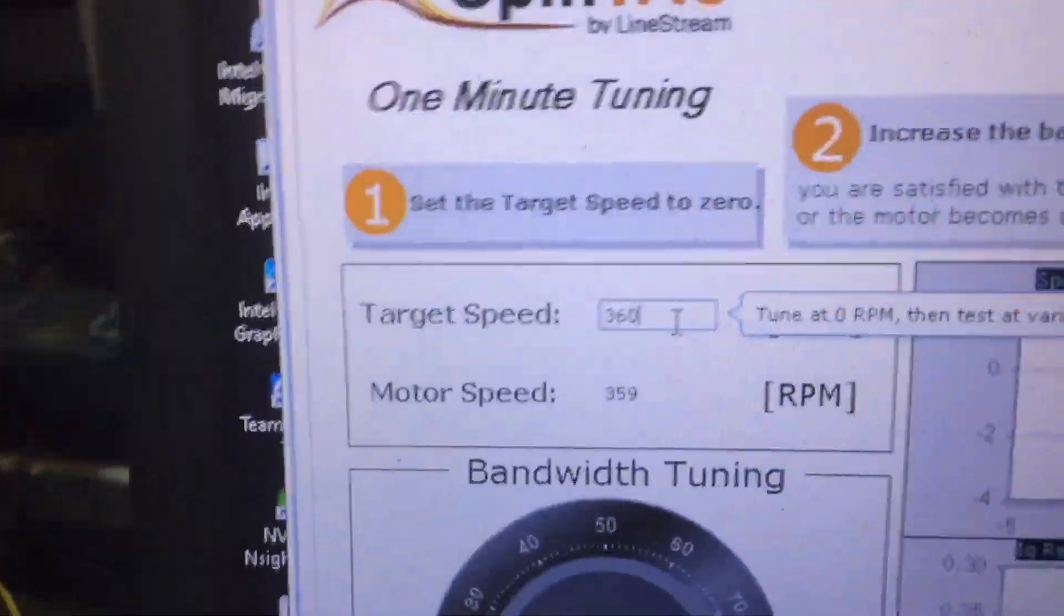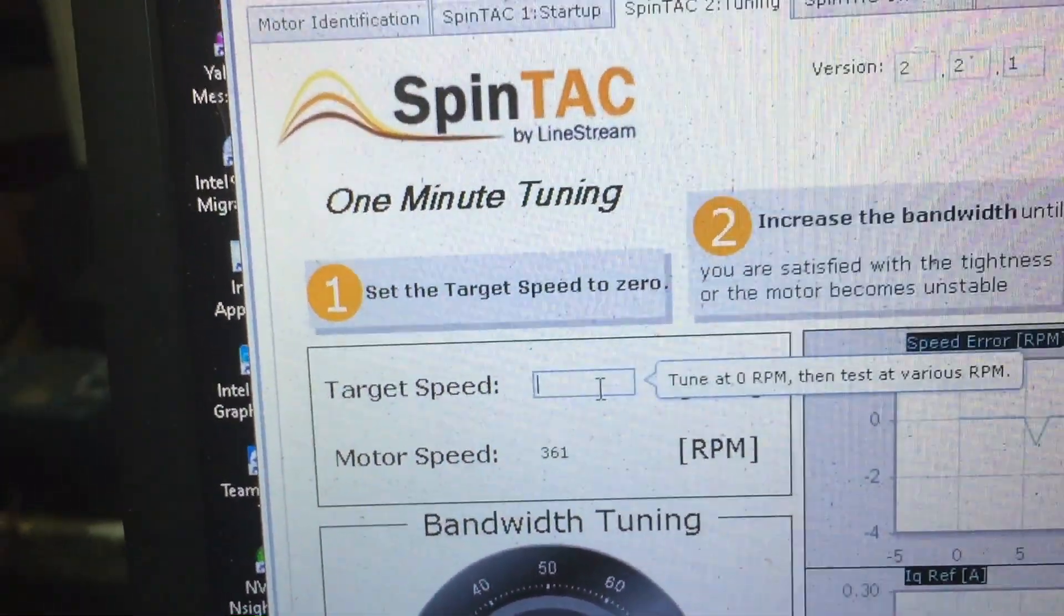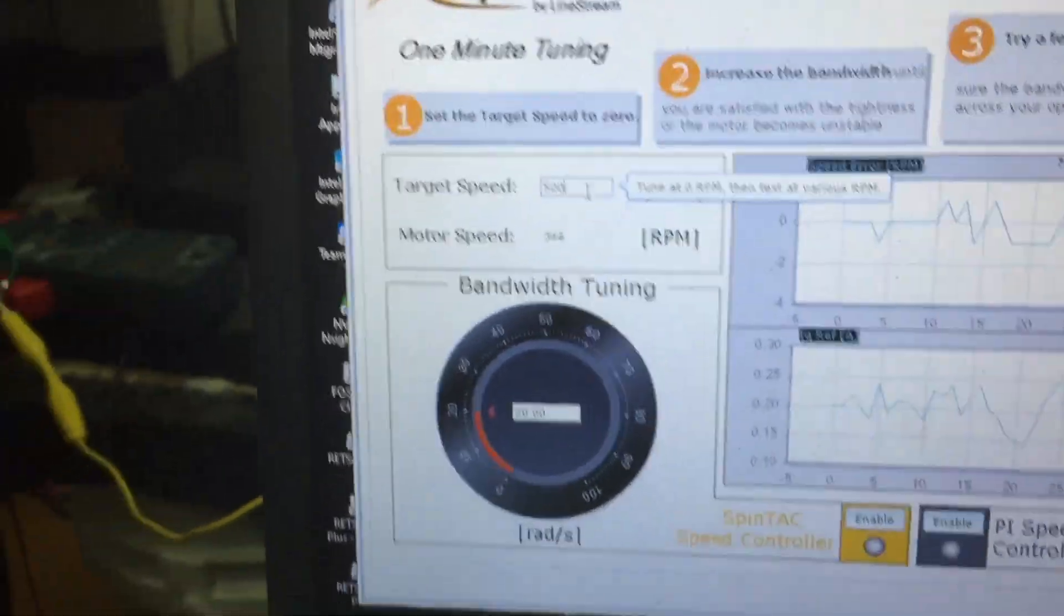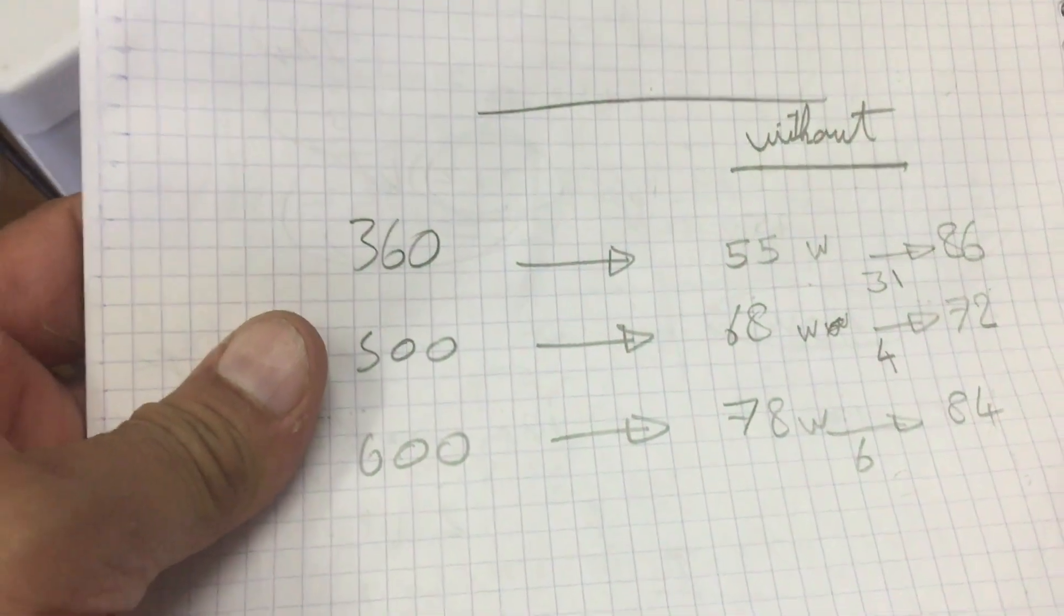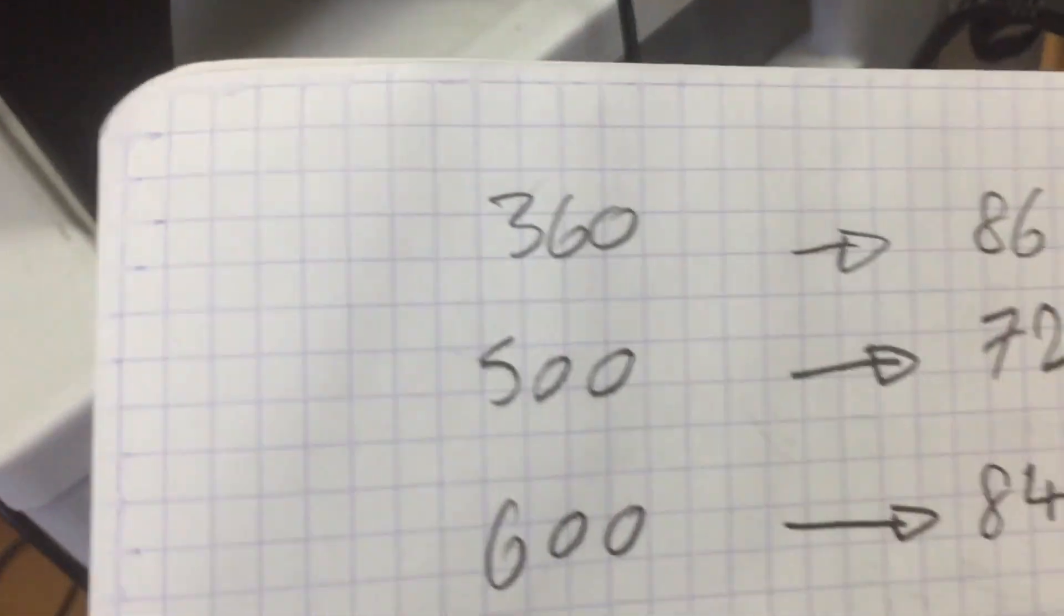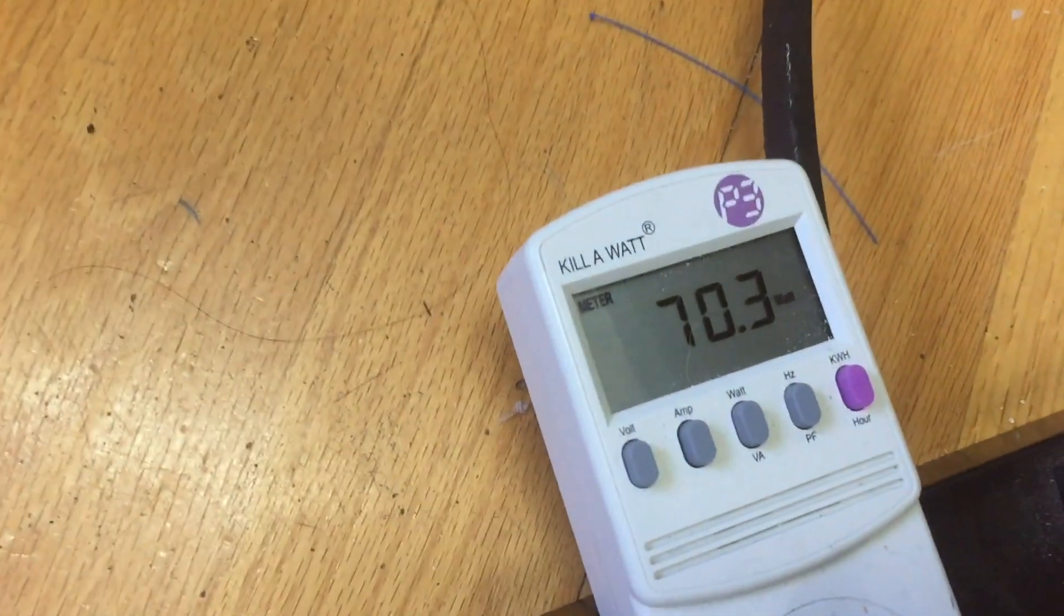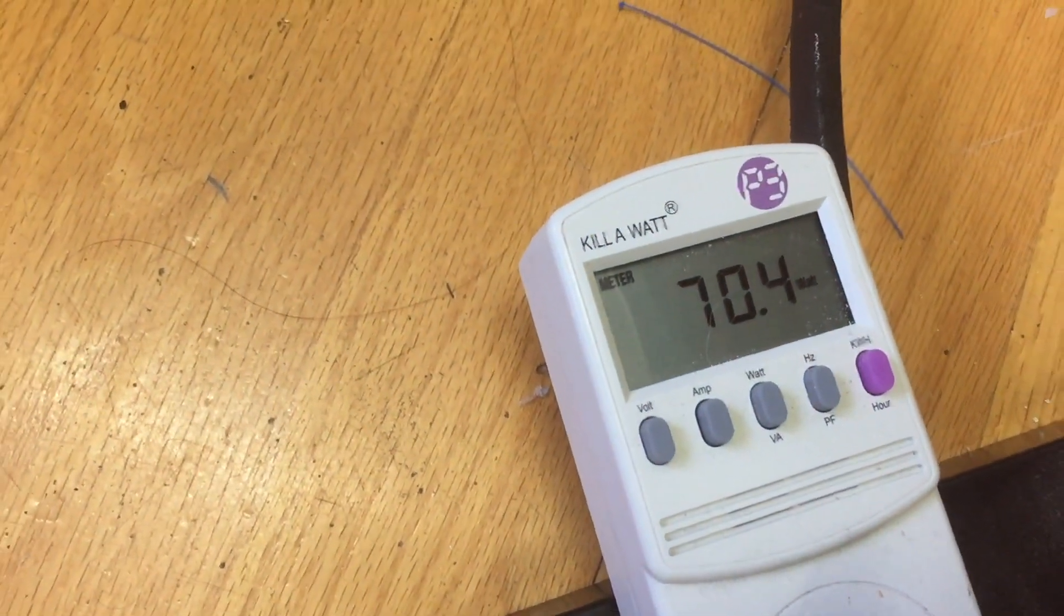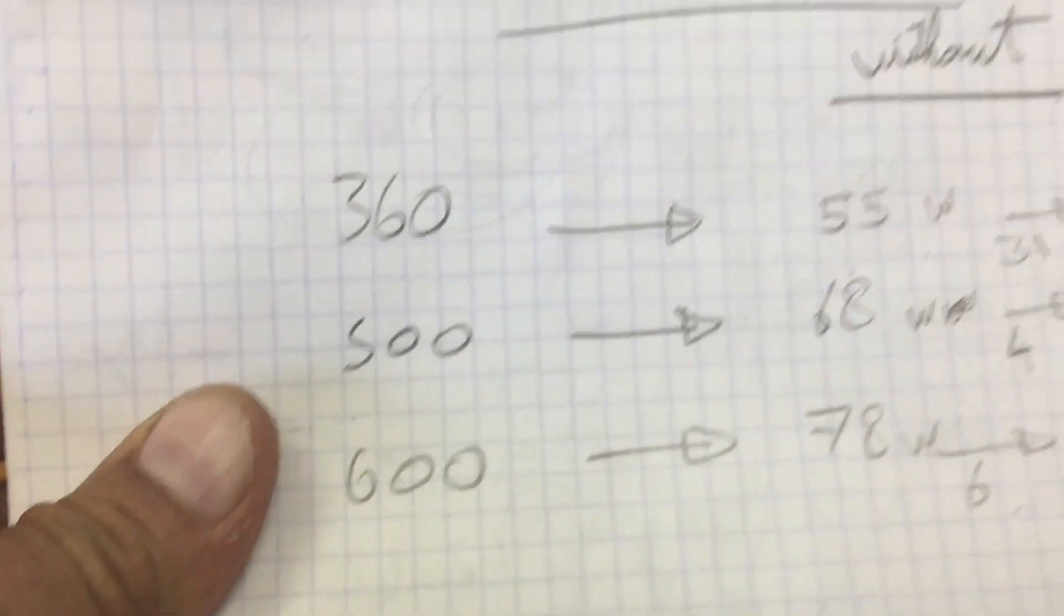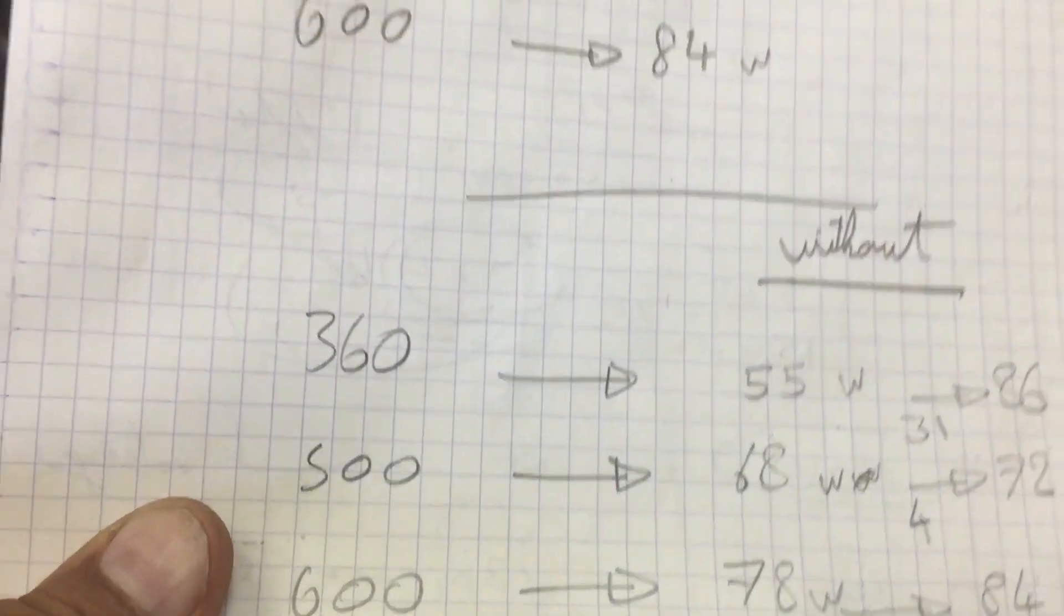Now we're gonna go to 500, this is supposed to read 72 with coils. So let's see. It's 500 and it is reading 70, which is a bit less than before and close to without coils, which is very good.